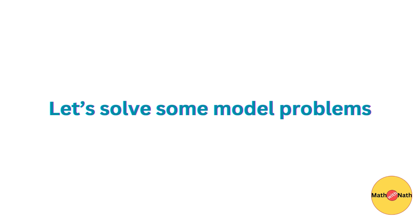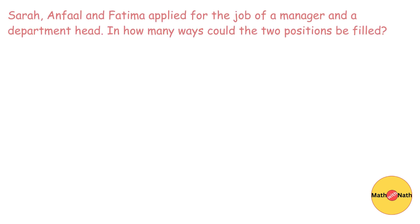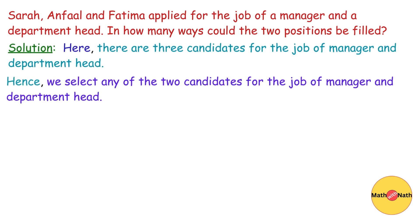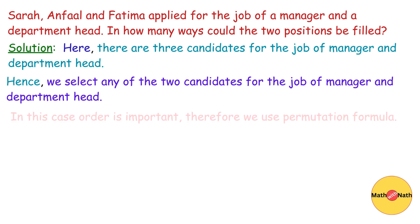Let us use these concepts to solve some model problems. Sarah, Anfall, and Fatima applied for a job of a manager and a department head. In how many ways could the two positions be filled? There are three candidates, and since order is important as there are two specific positions, we use the permutation formula.